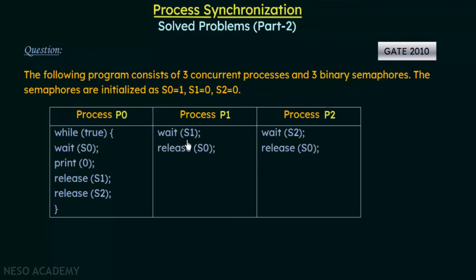In process P1, we see it uses semaphore S1 — it first checks whether S1 is free or held. The code of P1 then just releases S0, the semaphore used by P0. Similarly, process P2 uses semaphore S2 with a wait operation, and then it releases S0, which is also the semaphore used by process P0.